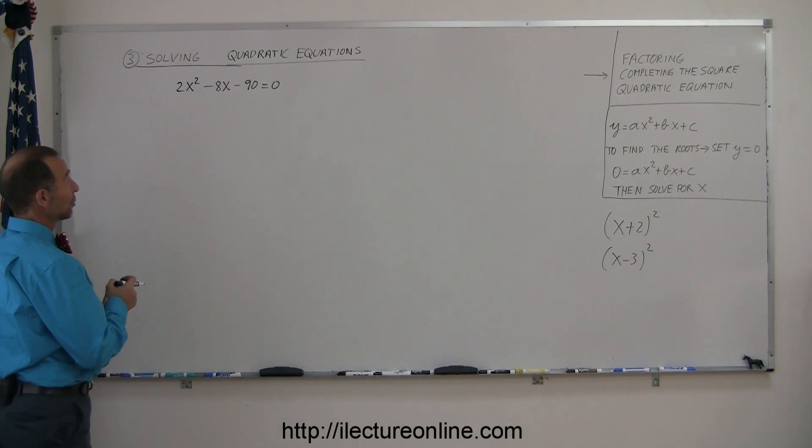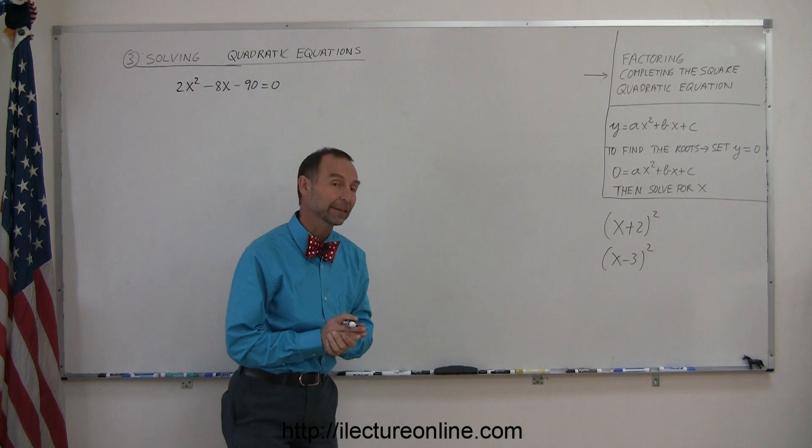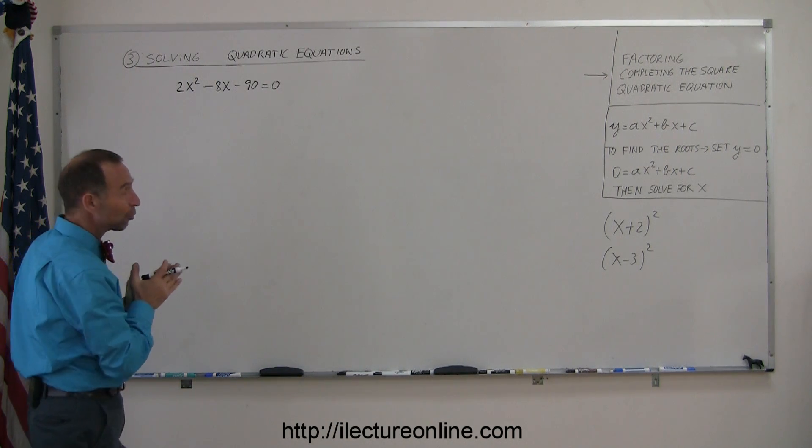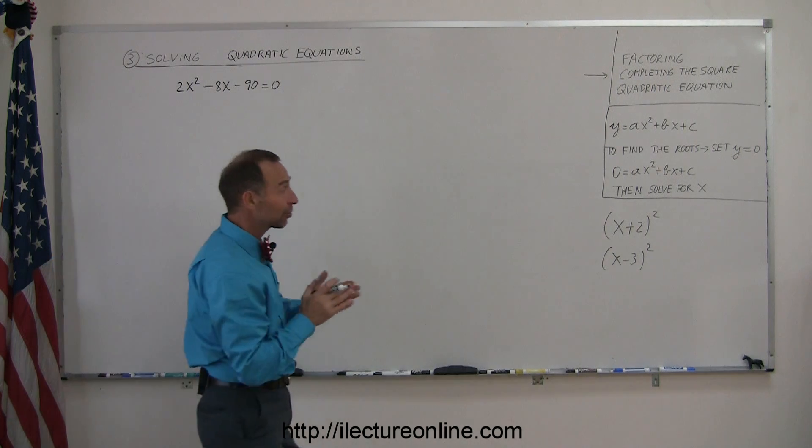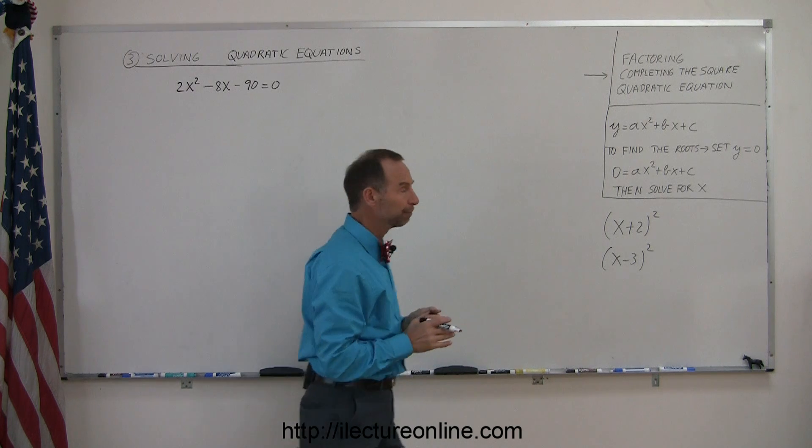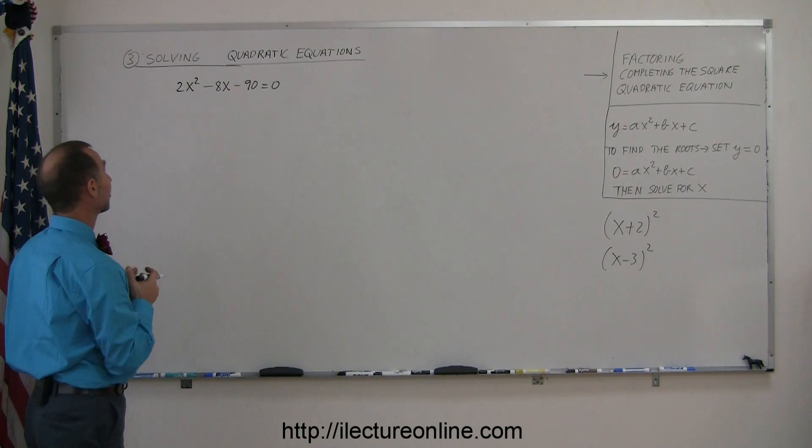The next step in solving quadratic equations is using what we call completing the square method. What that means is we want to rearrange the equation so we end up with a perfect square of a binomial on the left side. In order to get there, we need to go through a series of steps.